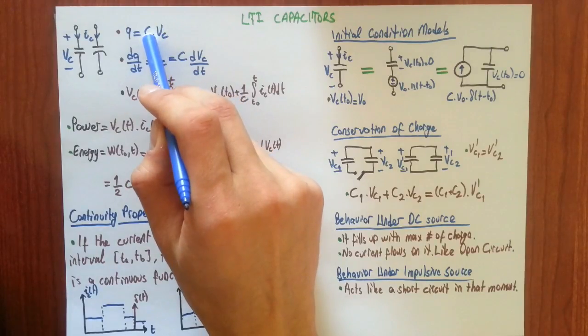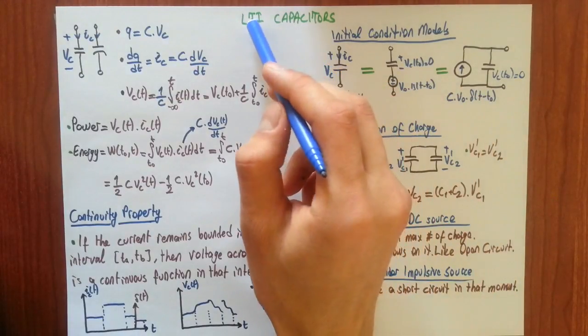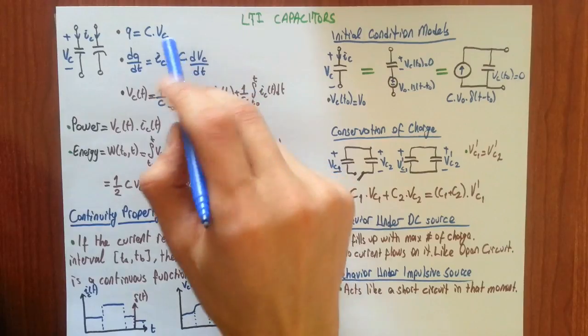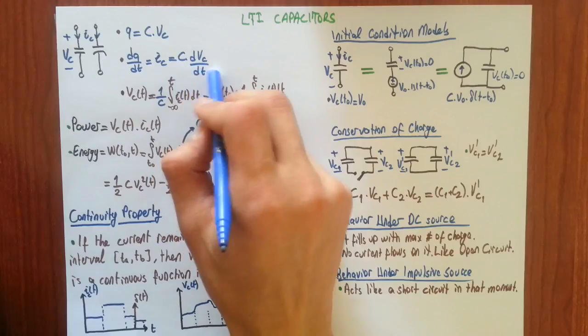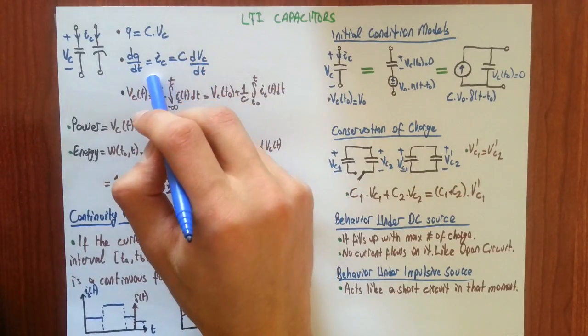On the right hand side we have derivative of C times Vc. Since C is just a constant, capacitance is constant—they are time invariants, remember—we can take derivative of the voltage. Then on the right hand side we have C times DVc over DT. These two pairs are equal to each other.